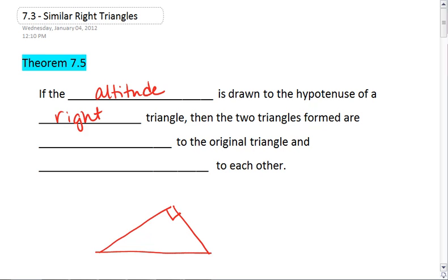There we go, right triangle, where here's our hypotenuse, and it's telling us we're going to drop an altitude to the hypotenuse.